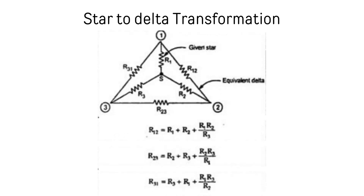Star to delta transformation: R1, R2, and R3 values are given and you can find the delta values R12, R23, and R31 using the formulas. R12 equals R1 plus R2 plus (R1 times R2 divided by R3). R23 equals R2 plus R3 plus (R2 times R3 divided by R1). R31 equals R3 plus R1 plus (R1 times R3 divided by R2).